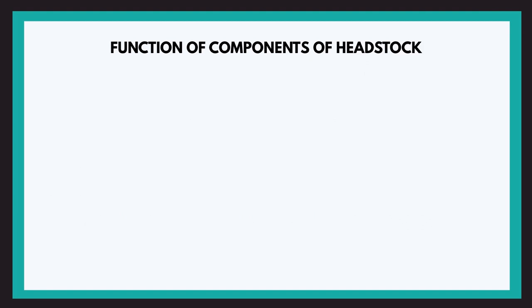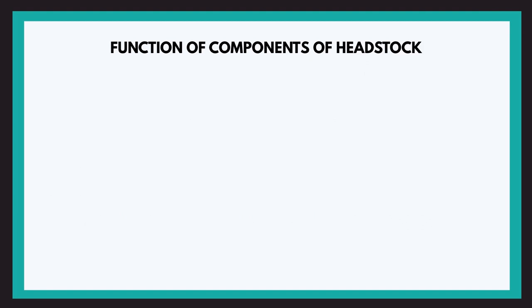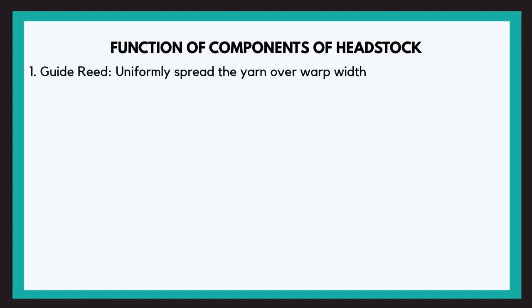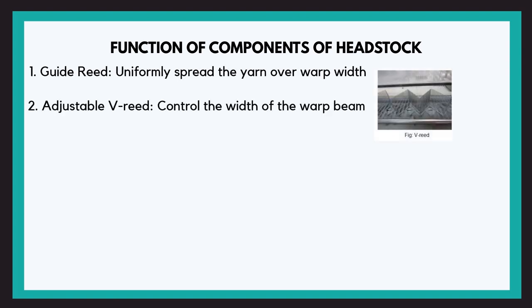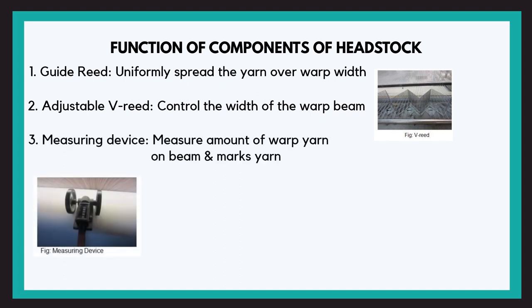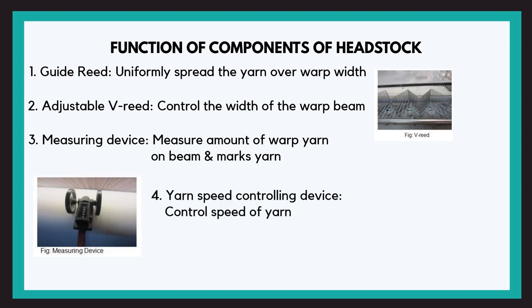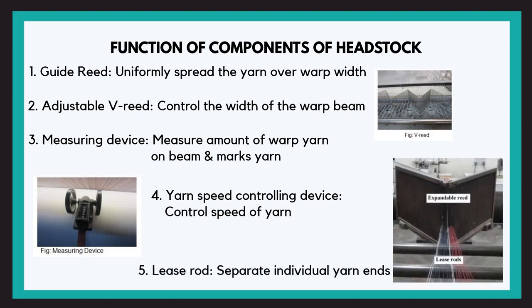Now we will be discussing the functions of the components of the headstock. The guide reed uniformly spreads the yarn over the warp width. The adjustable V reed controls the width of the warp beam. The measuring device measures the amount of warp yarn on the beam and marks it on the yarn. The yarn speed controlling device controls the speed of the yarn. The lease rod separates the individual yarn ends.